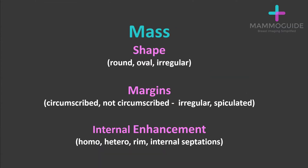When describing a mass, you want to mention the shape, which could be round, oval, or irregular. The margins, which could be circumscribed or non-circumscribed. If they're non-circumscribed, they can be described as irregular or spiculated.